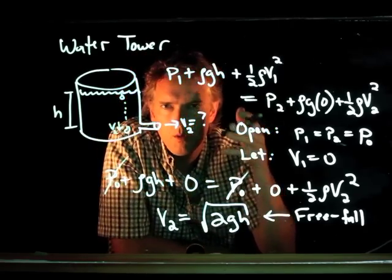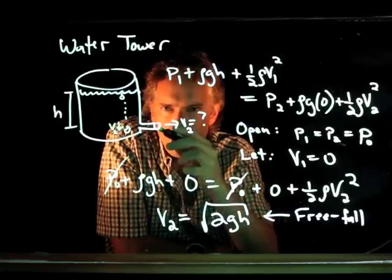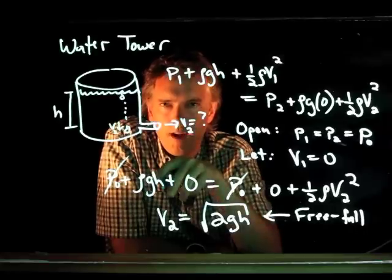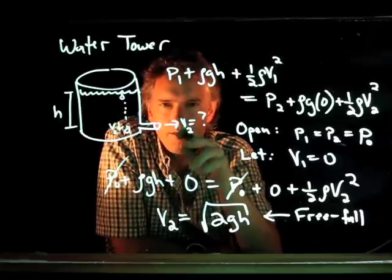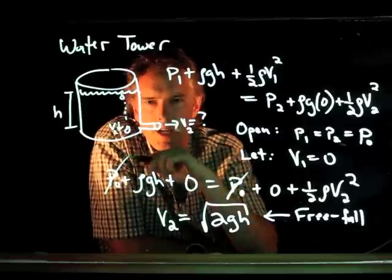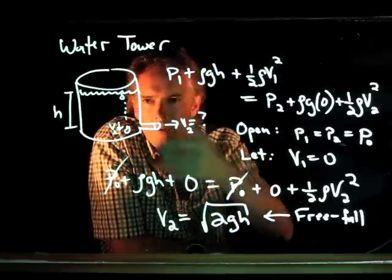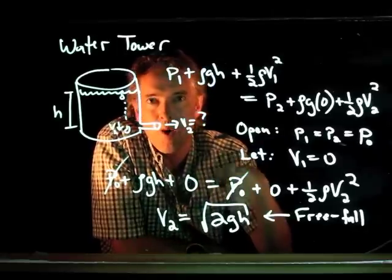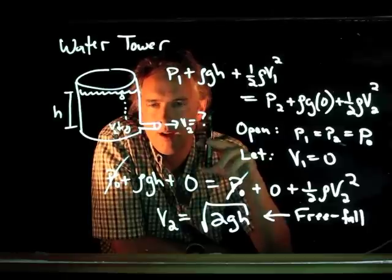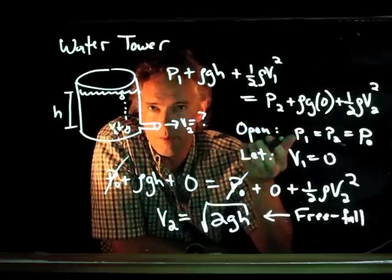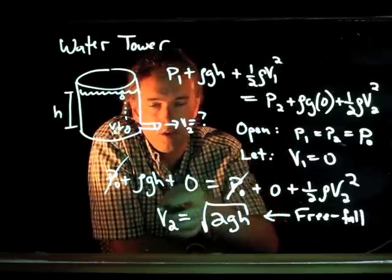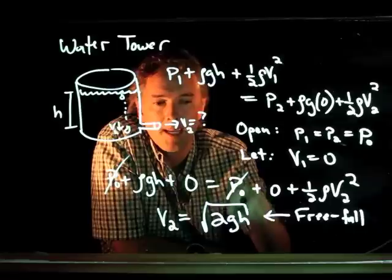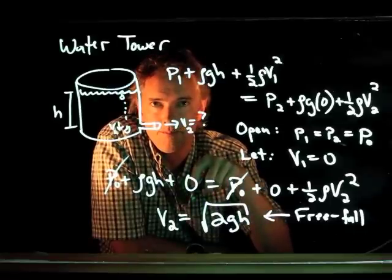What it means is, when you open your hose and water comes shooting out and you ask how fast is it coming out — it's exactly the same as if it had started from the top of the water tower and just fallen that distance h. Now you know why they put water towers up on top of mountains: you want your water pressure at the bottom to be significant enough to shoot out water at a high speed, and that means making h bigger.